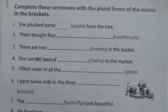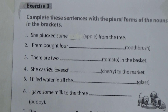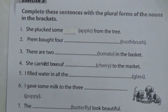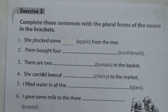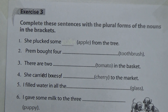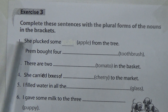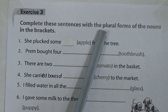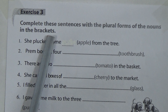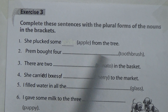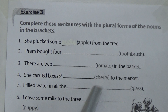Now, this is Exercise number 3 from Lesson 2. We all know that singular means when we talk about only one thing or one person. When we talk about more than one person, one thing, one object, one animal, or one verse, it is plural. The exercise says: complete these sentences with the plural forms of the nouns in brackets.